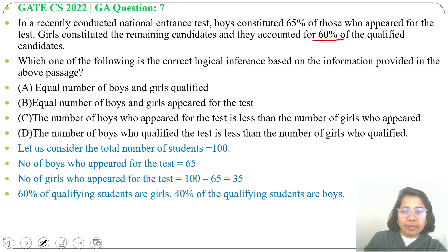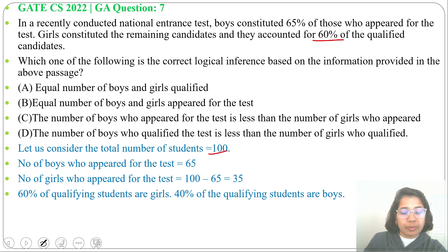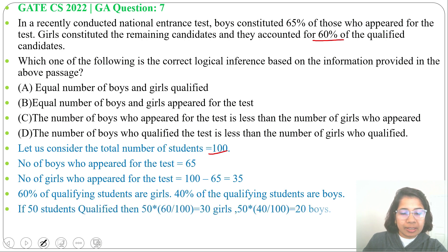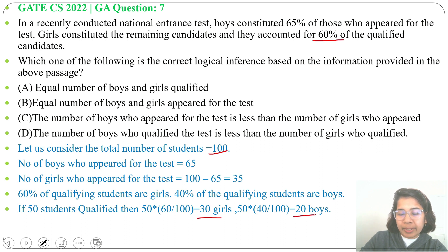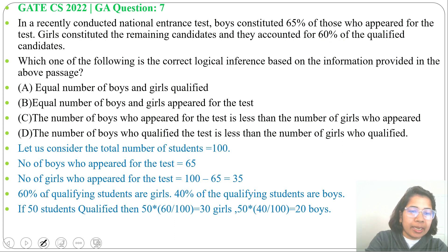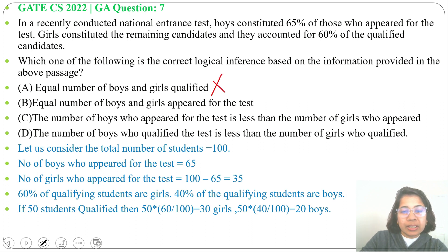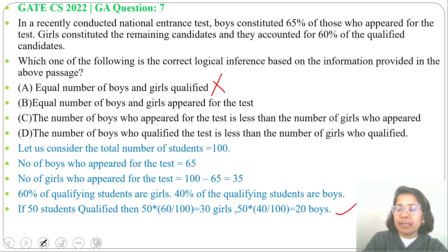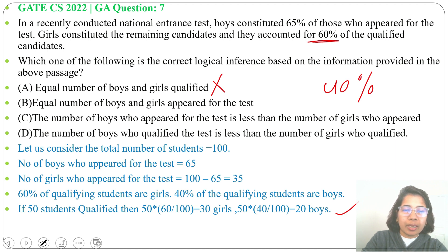Let's consider an arbitrary number — I'm taking 50. From 100 students, let's say 50 students qualified. From that 50, 60% girls means it will be 30, and 40% boys means it will be 20. Now check option A: equal number of boys and girls qualified — wrong. More girls are qualified than boys. Even without finding the exact number, since 60% of qualified are girls and 40% are boys, the number of girls who qualified is more than boys.